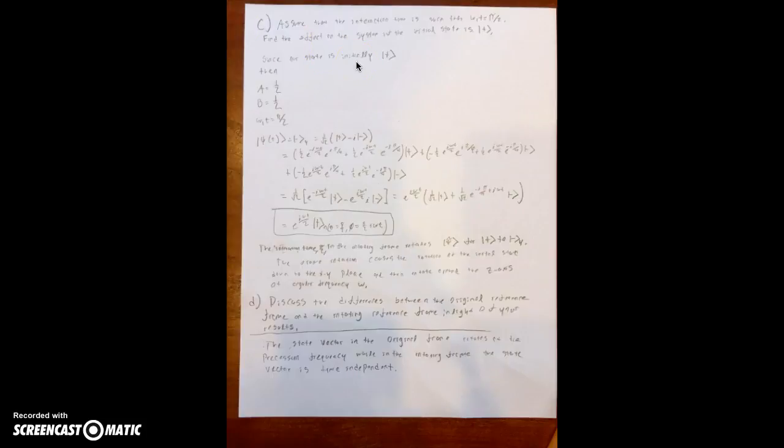Part C asks us to assume that the interaction time is such that omega 1 times t equals pi over 2, and find the effect on the system if the initial state is spin up on the z-axis. Since our state is initially at spin up on the z-axis and using our state vector at t equals zero, we find that a is equal to one half, b equals one half, and omega 1 times t equals pi over 2.